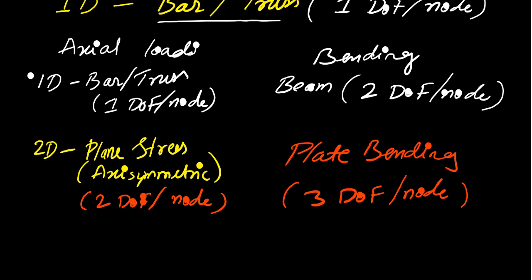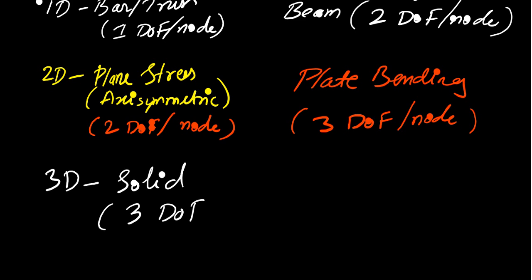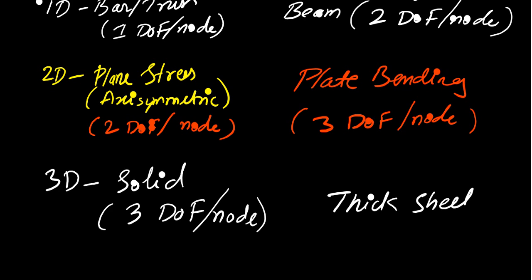For 3D elements, like solid elements, there will be 3 degrees of freedom at each node. And for bending, coming to the shell element, the degree of freedom will be 6 degrees of freedom per node. This covers the degree of freedom for 1D, 2D, and 3D elements, which may be asked in competitive exams or technical rounds.